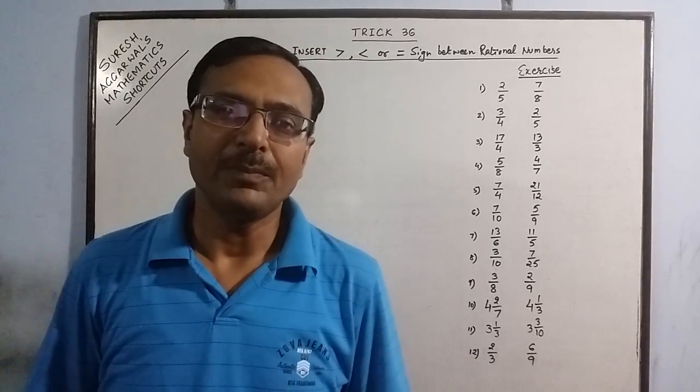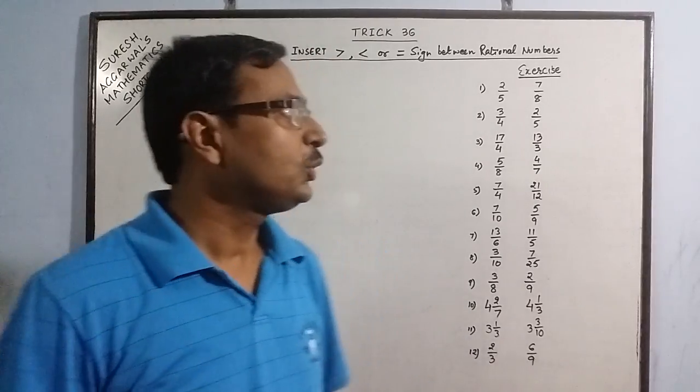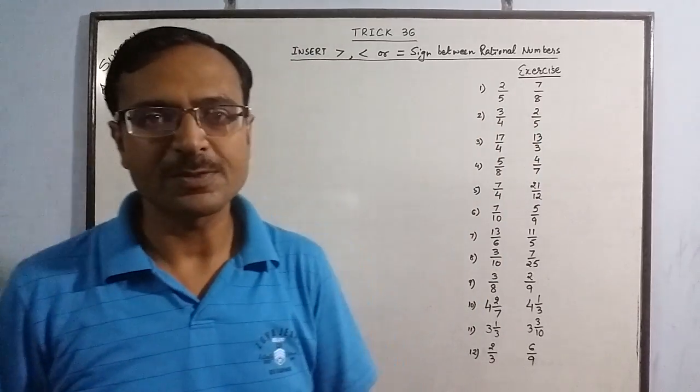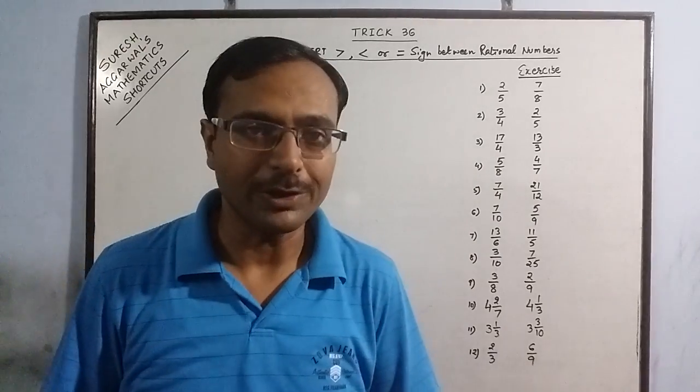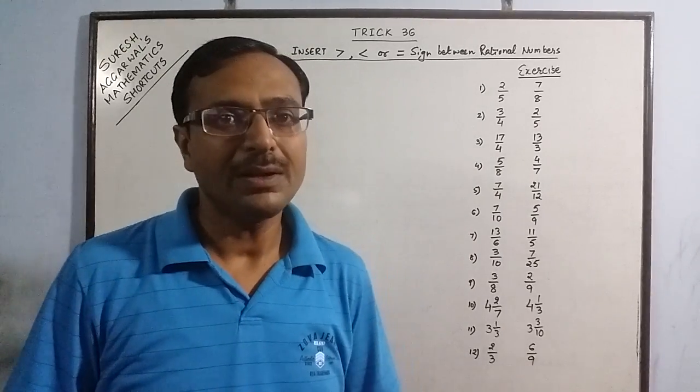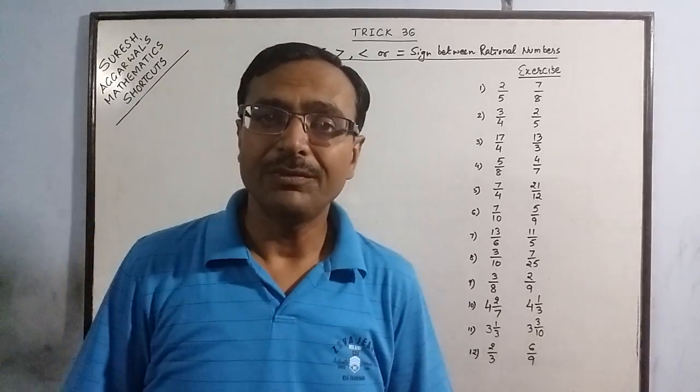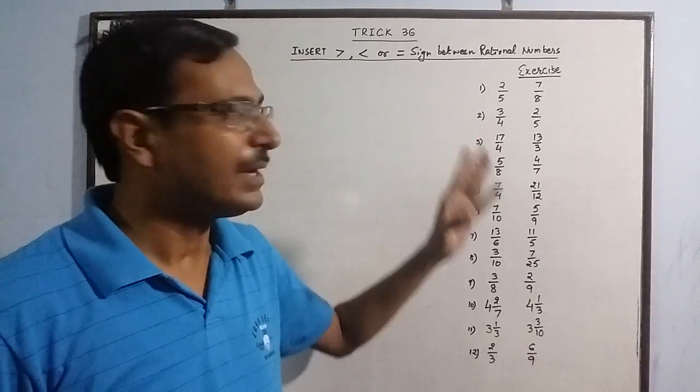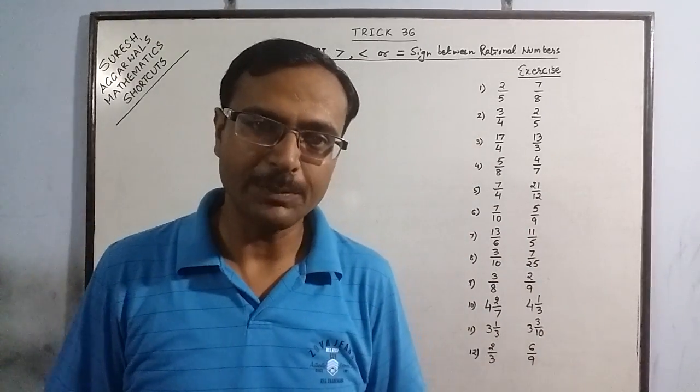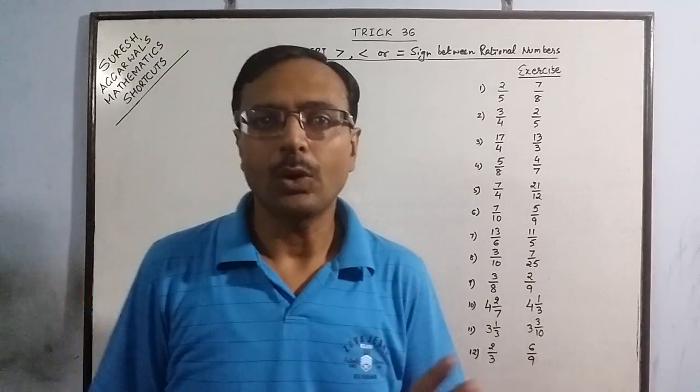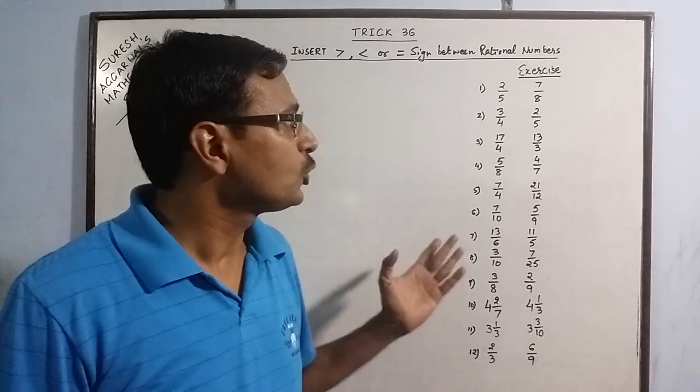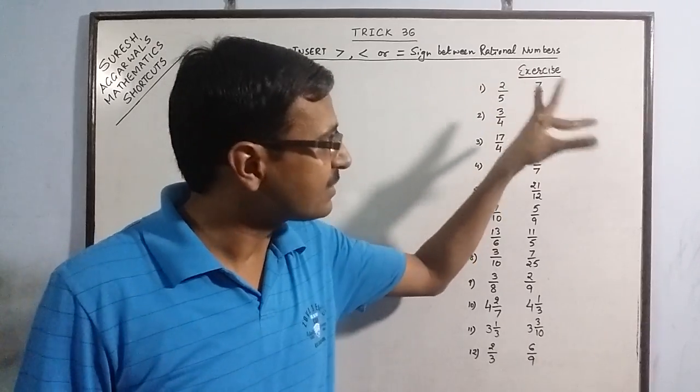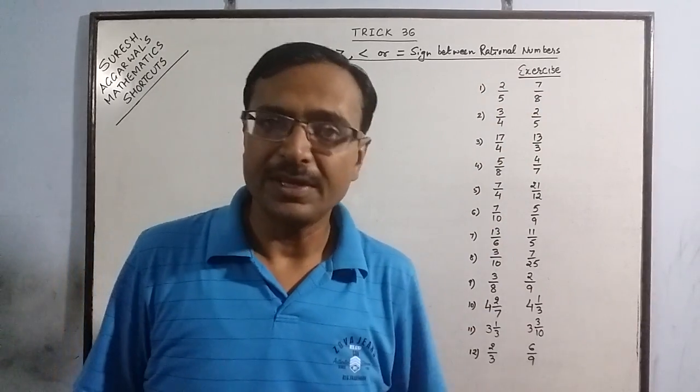Today I am going to tell you one shortcut through which you can find out which of two given rational numbers is greater or smaller or whether they are equal. This simple concept can be dealt with in a blink of an eye. You don't have to follow the traditional method or divide the rational numbers to find them in decimal form first.